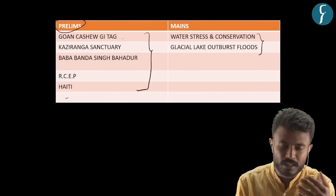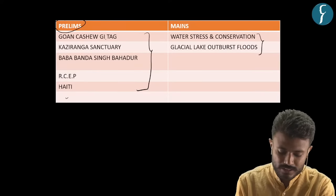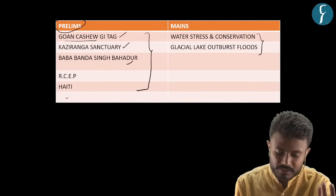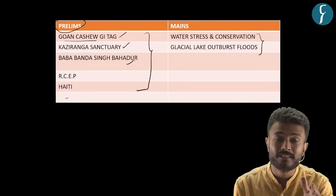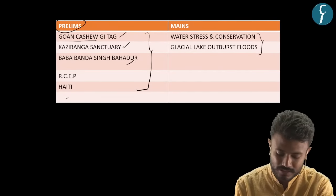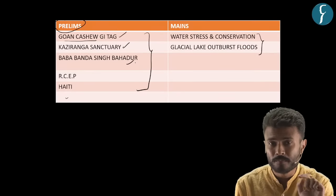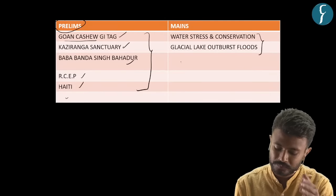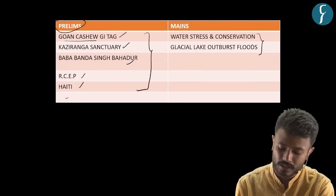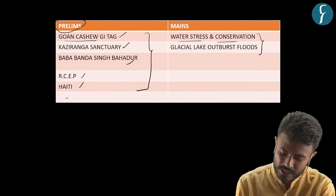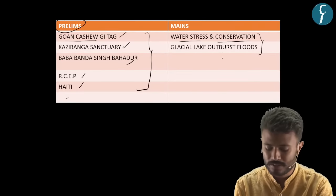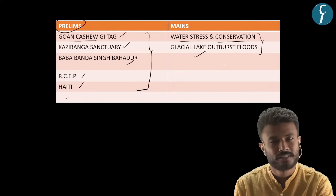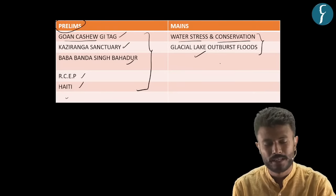The topics for prelims include Goan Cashew in the context of GI Tag, Kaziranga Sanctuary, Baba Banda Singh Bahadur — which appeared in today's Hindu — RCEP, and a map-based question. From the mains perspective, we will take up water stress and conservation, and from disaster management, we will cover Glacial Lake Outburst Floods, also known as GLOF.